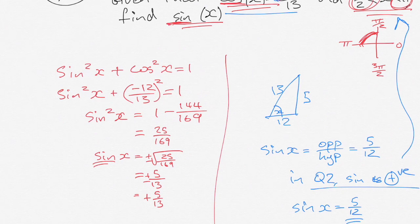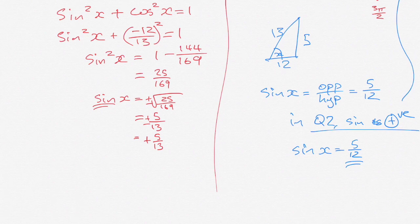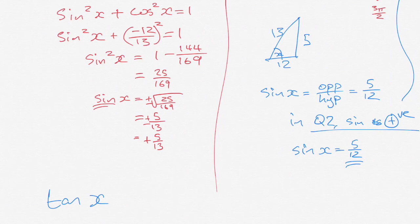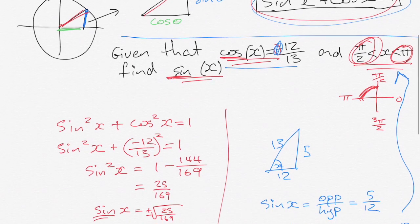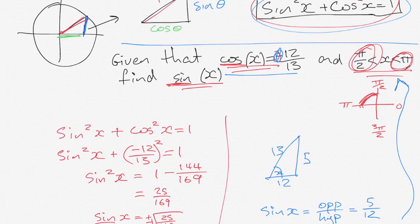I'll also point out you will quite often get questions that ask for tan x, so maybe it gives you tan x and it asks you to find another ratio or it gives you another ratio and it asks you to find tan x. Our Pythagorean identity, sin squared x plus cos squared x equals 1, that identity doesn't have tan in it.